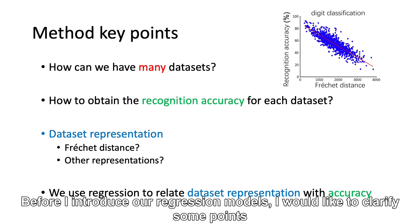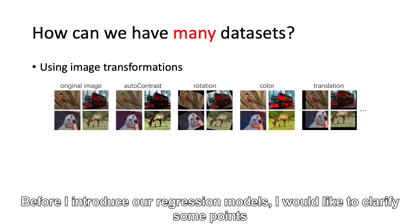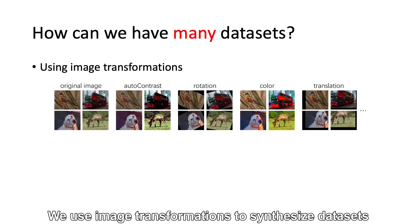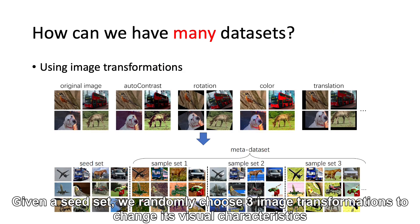Before I introduce our regression models, I would like to clarify some points. We use image transformations to synthesize datasets. Given a seed set, we randomly choose three image transformations to change its spatial characteristics. In this way, we can generate many sample sets.